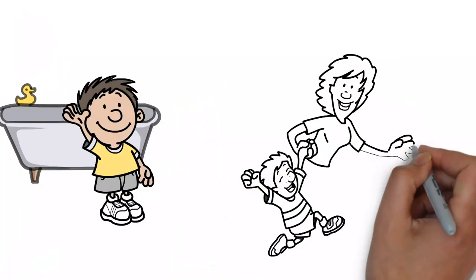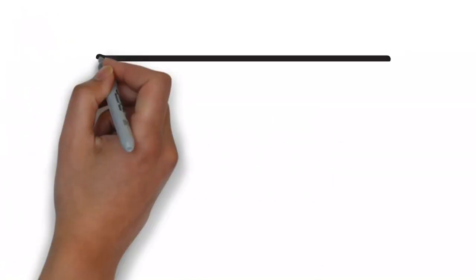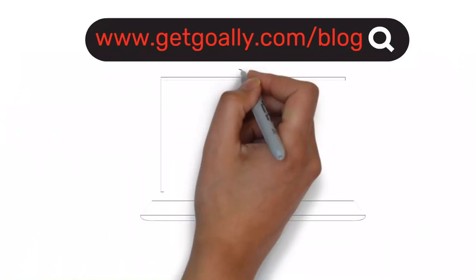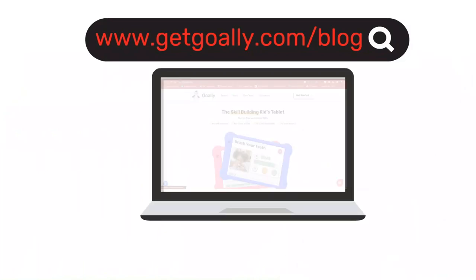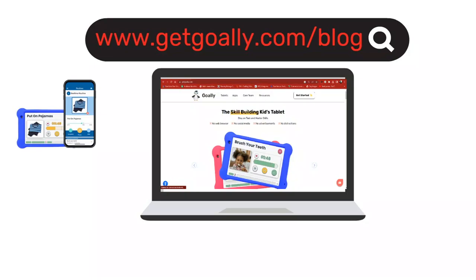So if you want to learn more about making bath time easier for your kiddo with autism, go to our blog, www.getgoalie.com slash blog. We have tons of tips for parents, especially parents of those with learning differences. In fact, we make apps for kids with learning differences. We have a great visual schedule tool where you can upload your own videos, and we have reward apps.